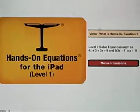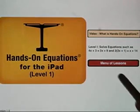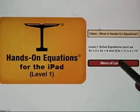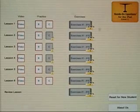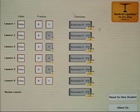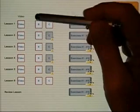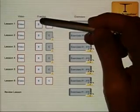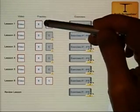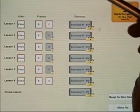So you can watch that video and have more information about Hands-On Equations. Let's now go to the menu of lessons. We notice that there are six lessons in Hands-On Equations Level 1 with one review lesson. Each lesson begins with a video, after which you have two practice examples, B and C, and 10 exercises.